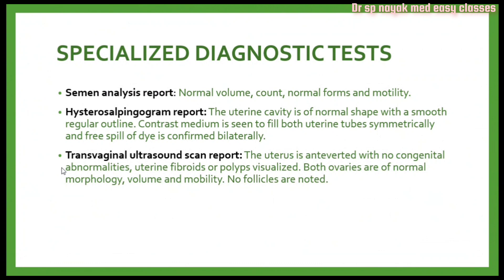A transvaginal ultrasound scan was performed. The uterus is anteverted with no congenital abnormalities, uterine fibroids, or polyps visualized. Both ovaries are of normal morphology, volume, and mobility. No follicles are noted. An anteverted uterus describes the position of the uterus tilting forwards towards the abdomen and does not cause health concerns. The key finding here is that no follicles were noted, which is the indication for why the patient was suffering from infertility.